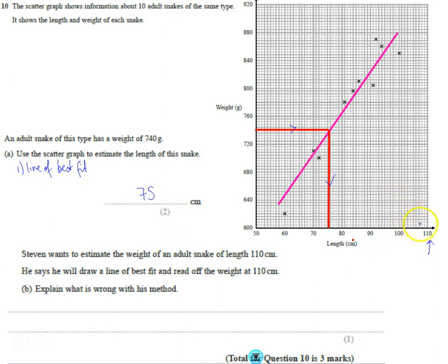Well, the problem with that is the last bit of data we have is around here, and 110, if the line of best fit carried on, would go up here. It's not recommended. It's not good practice to make an estimate of data which is outside the data you've got, because you don't know if this line is going to carry on. You can see in this area down here there's no data, and in this area up here there's no data.